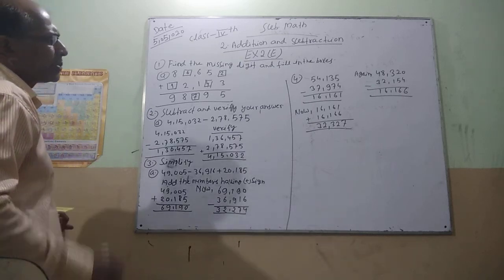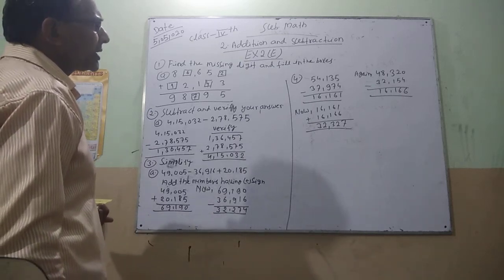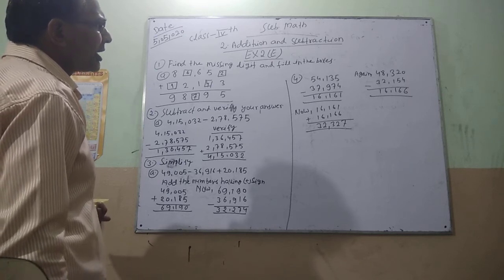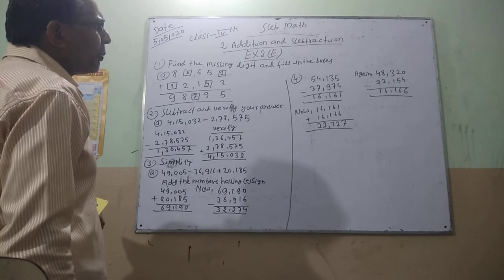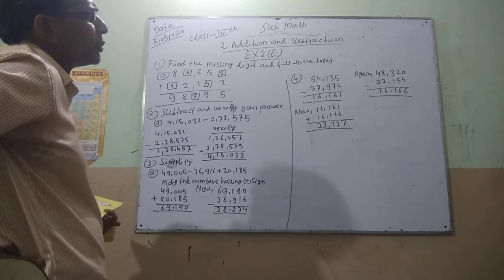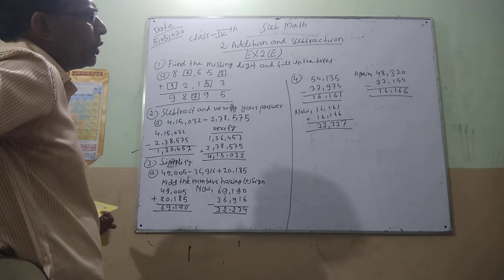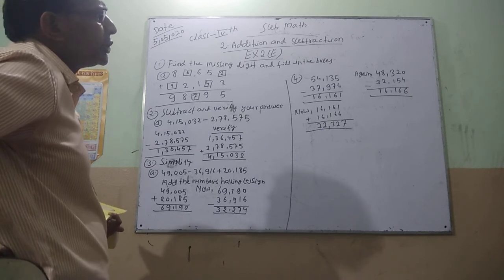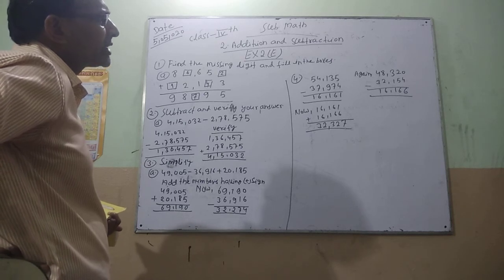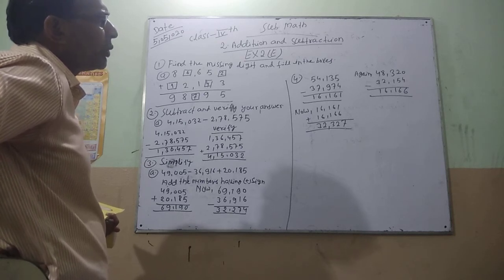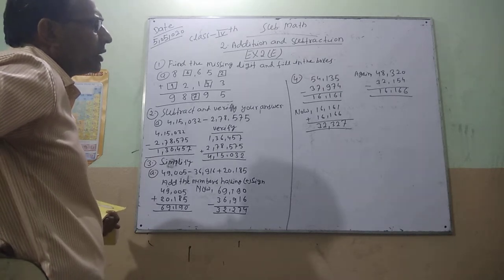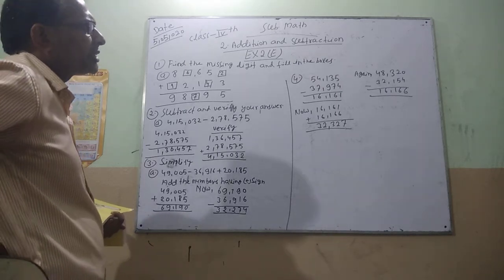5 minus 4 is 1, 30 minus 7 is 6, 10 minus 9 is 1, 30 minus 7 is 6, 4 minus 3 is 1. 60,161. Now, the second difference is 0 and 4. 10 minus 4 is 6, 11 minus 5 is 6, 2 minus 7 is 1, 2 minus 6 is 6, 4 minus 3 is 1. 60,166.